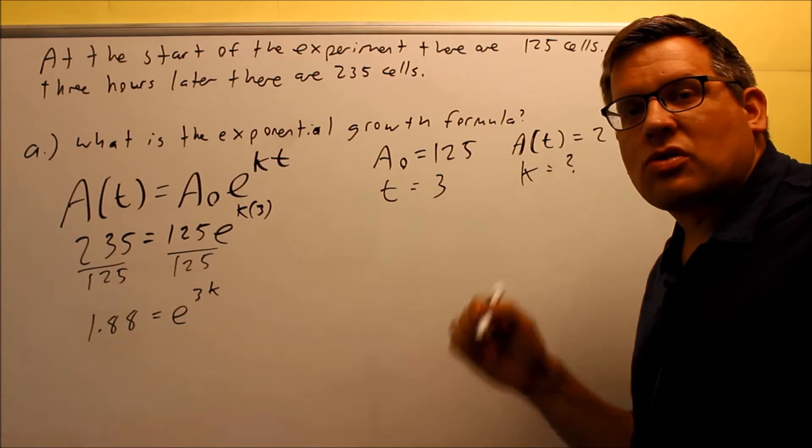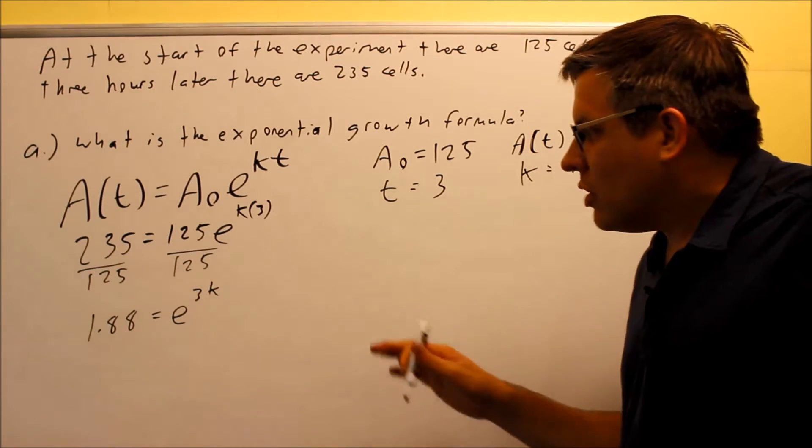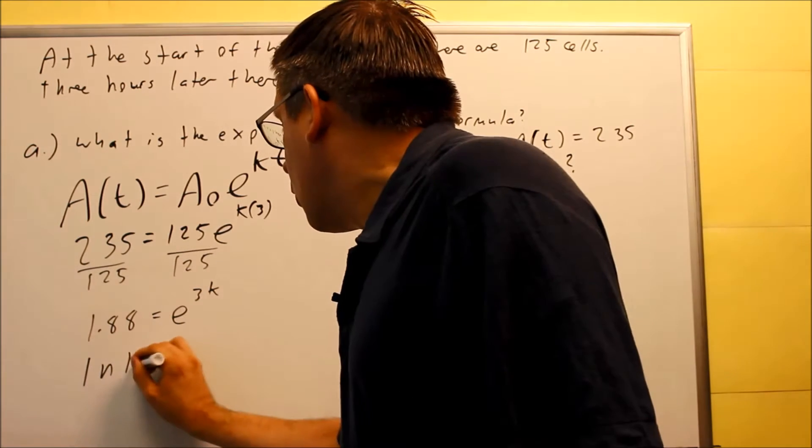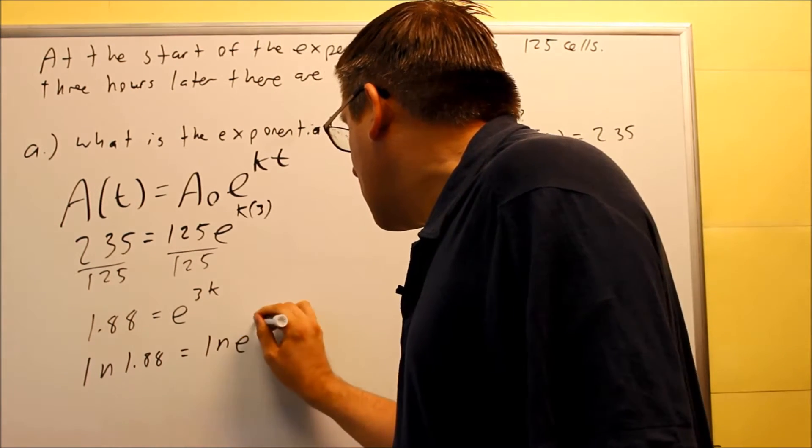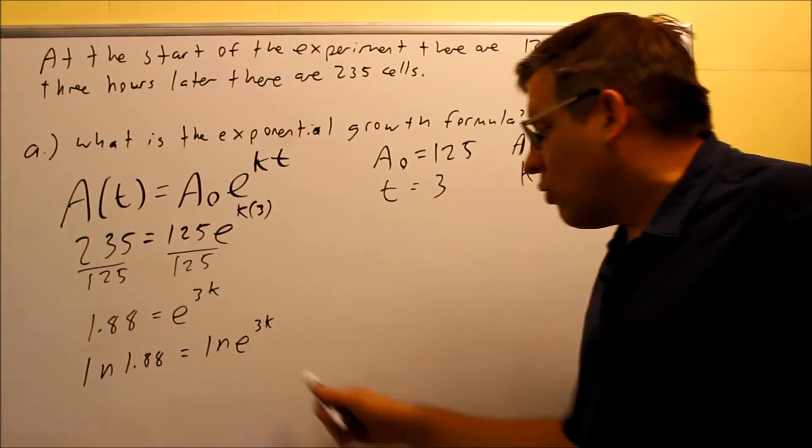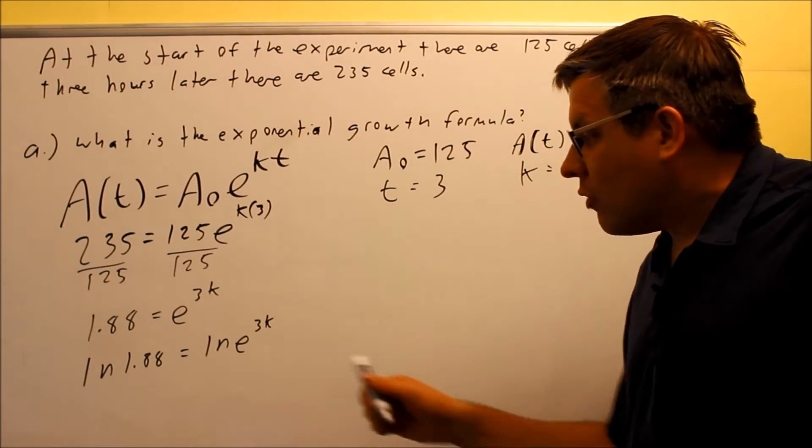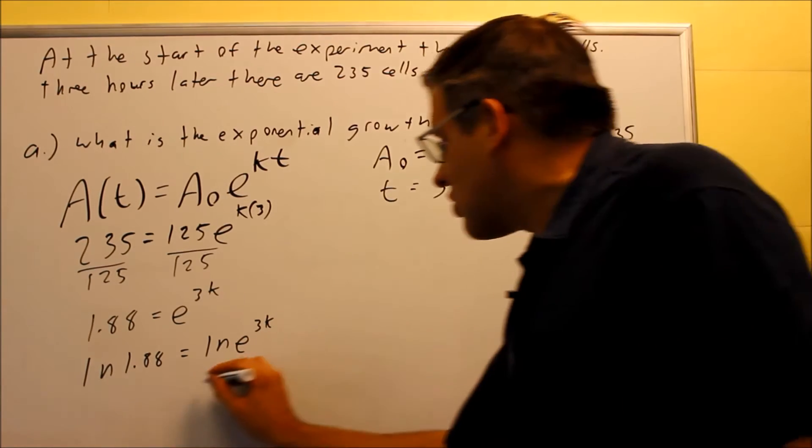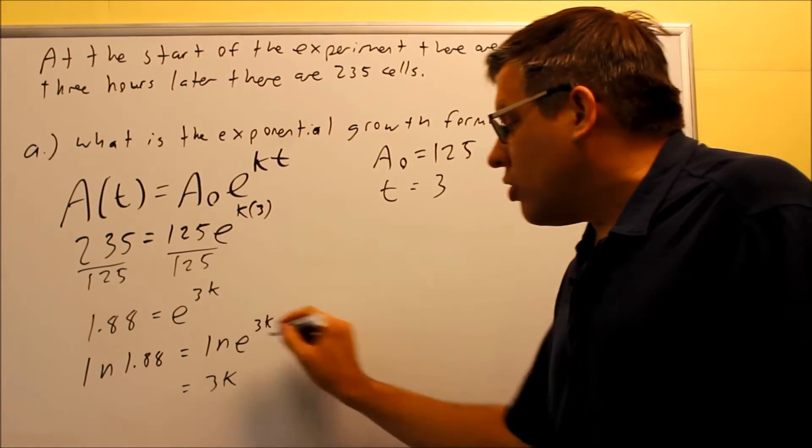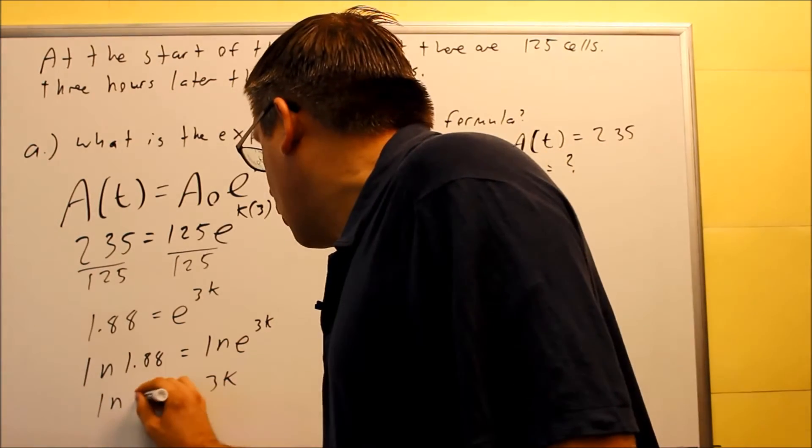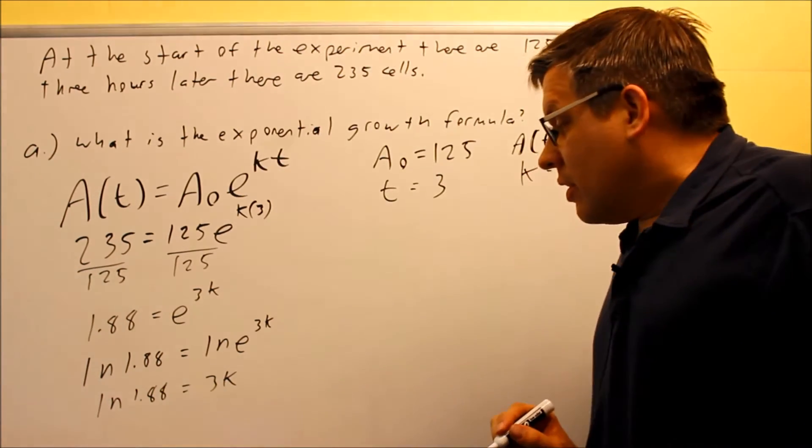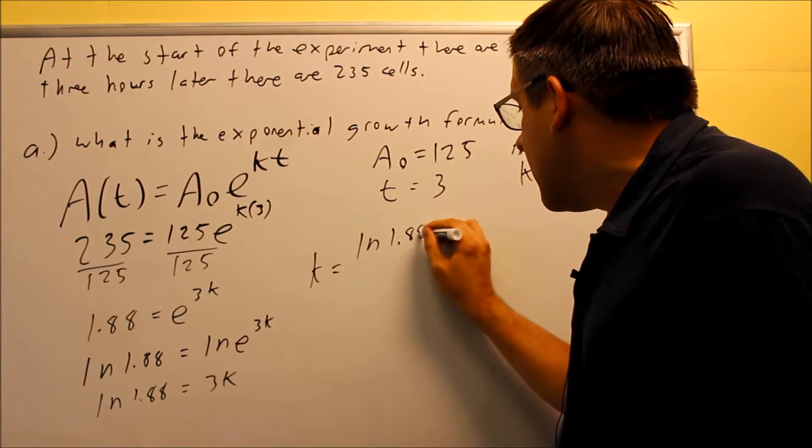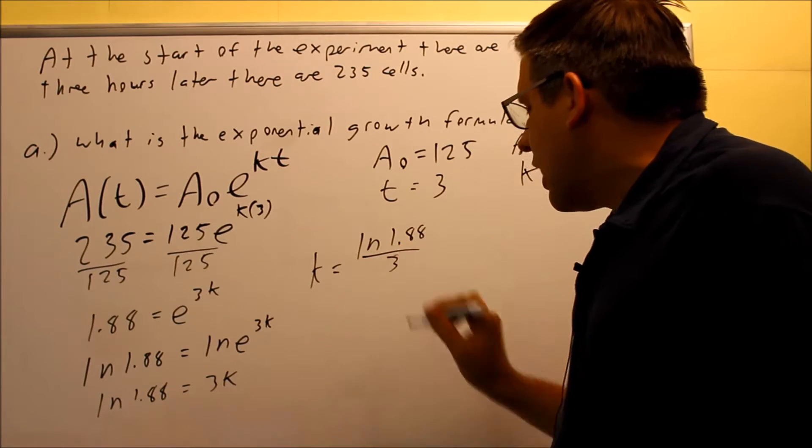Now from the previous section, we talked about solving exponential equations. One technique we did here was to get rid of the e, we took the natural log of both sides. So you're going to do ln 1.88 equals ln e to the 3k. Now when you have ln and e together, that's one of our log properties we talked about before. The log and base cancel. So this is going to give you just 3k. Then we need to solve for k by dividing both sides by 3. So your k is going to be ln of 1.88 divided by 3.